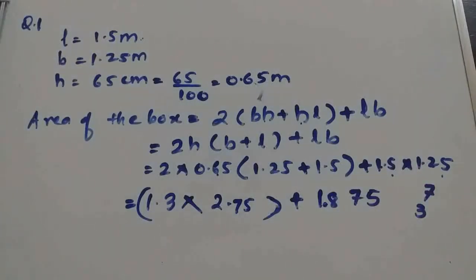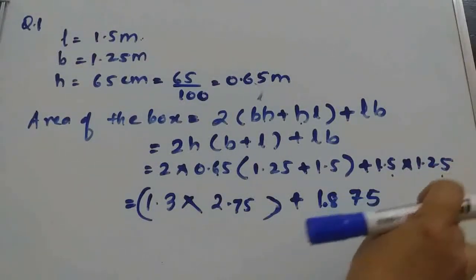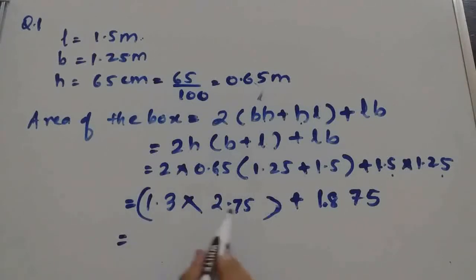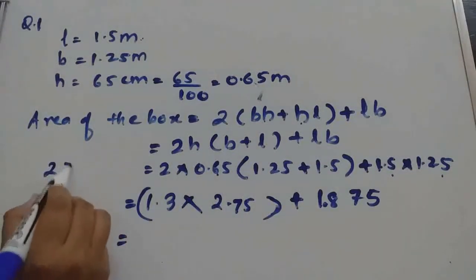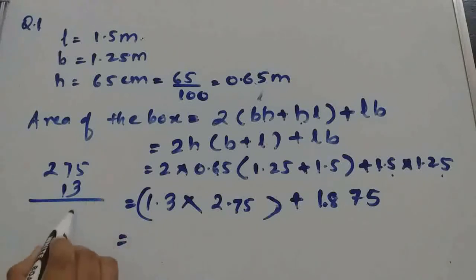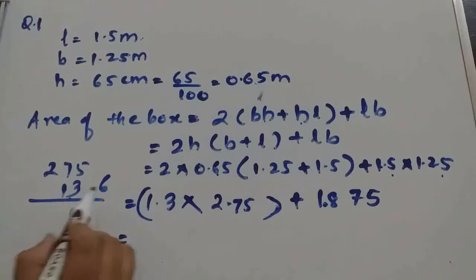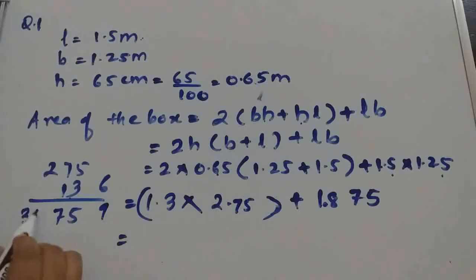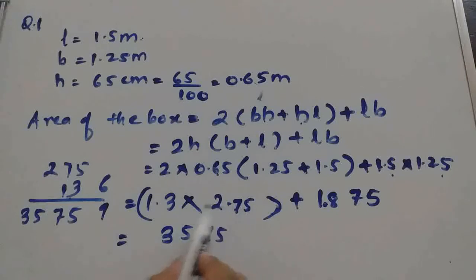So ultimately we multiply 13 into 275. From 13's table you can check: 13 times 7 is 91, so you get 35.75. Now after 3 decimals, we put after 3 digits: 1.875.